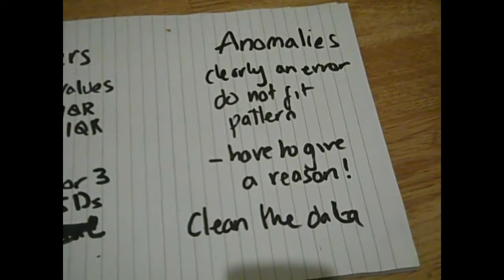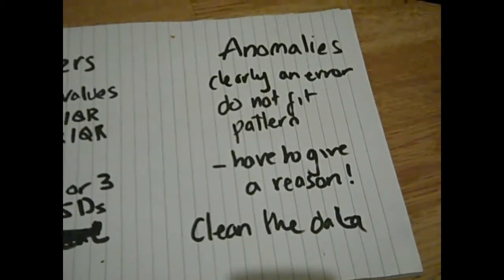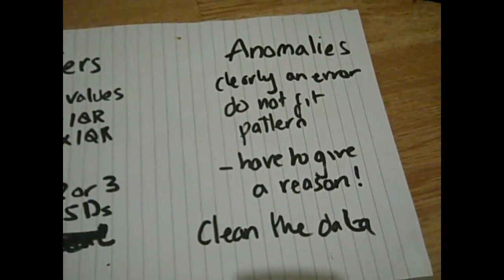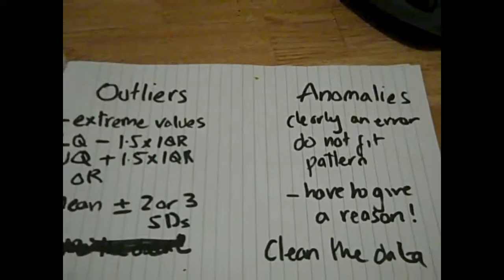An anomaly is a data point that's clearly an error. It doesn't fit any kind of mathematical pattern, and you are meant to remove it - that's called cleaning the data. Okay, hopefully that's cleared up the difference between outliers and anomalies.